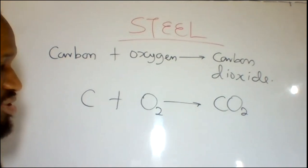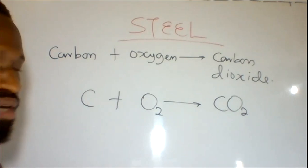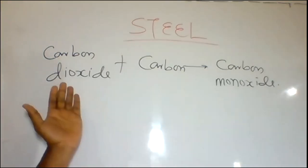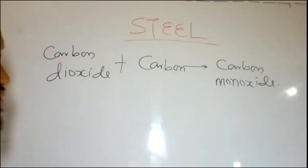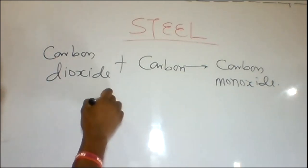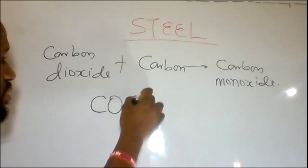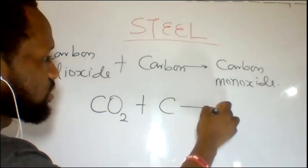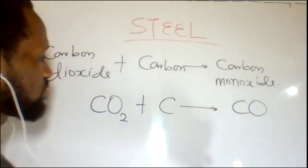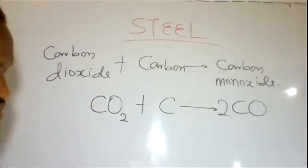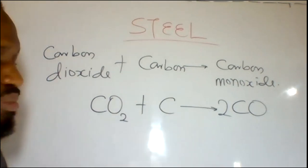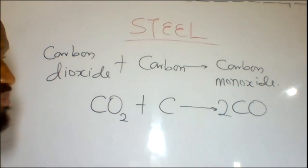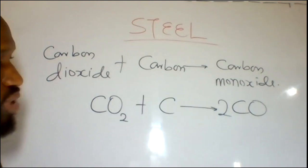A further continuation of the reaction of carbon dioxide occurs. Since the carbon dioxide formed is not a reducing agent, it reacts with carbon to form carbon monoxide, which is a very good reducing agent. So CO2 + C → 2CO. Carbon monoxide is very effective in the reduction of iron ore to iron.